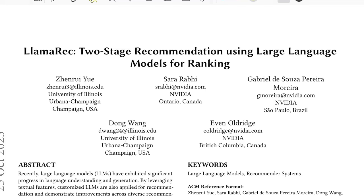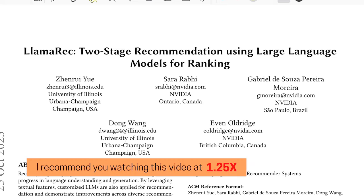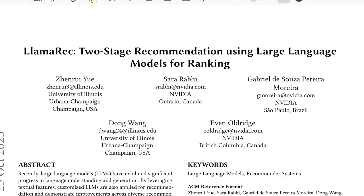Welcome back to the new video. Today we'll be talking about this paper which is LLaMA Rec — two-stage recommendations using large language models for ranking. As I discussed some of the cons in the previous one, this one tries to solve some of them: how do we rank your recommendations and how to do that efficiently. Let's get into the abstract and see what they're trying to do.